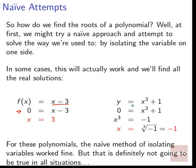Or if we had y = x³ + 1, we set that to zero: 0 = x³ + 1, so x³ = -1. We take the cube root of both sides and get x = -1. In both of these cases, the naive method of isolating for variables worked just fine, but that's definitely not going to be the case for all situations.